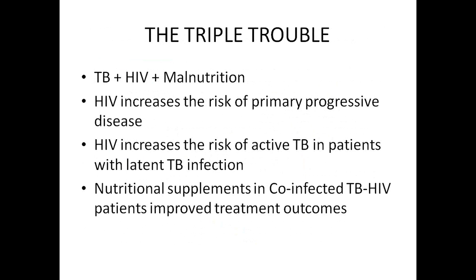Co-infection of HIV and TB introduces an extra dimension to the pathophysiology of malnutrition, worsening the malnutrition seen in TB or HIV infections alone. The risk of primary progressive TB is higher in people with HIV infection. The lifetime risk of conversion from latent to active TB is around 5 to 10 percent in otherwise healthy populations, but this can rise to around 50 percent in people with severe impairment of the immune system due to conditions like HIV infection. Studies have shown that nutritional supplements in co-infected TB and HIV patients improve treatment outcomes.